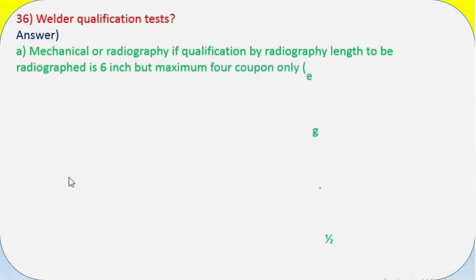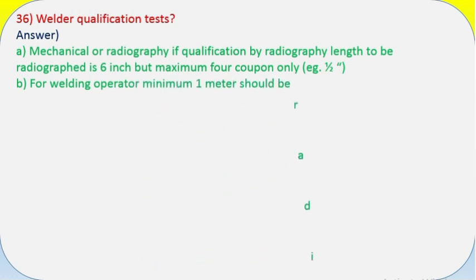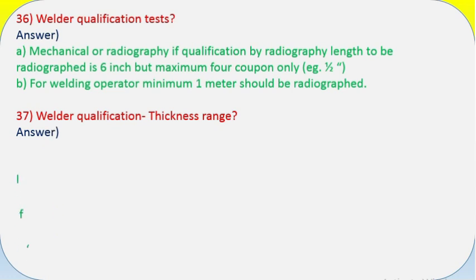Question 36: Welder qualification tests? Answer: A) Mechanical or radiography. If qualification by radiography, length to be radiographed is 6 inch but maximum for coupon only, e.g., 1/2 inch. B) For welding operator, minimum 1 meter should be radiographed.